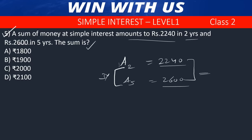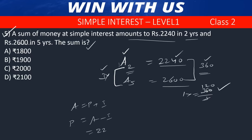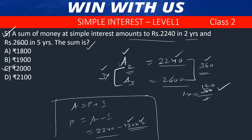Amount for 2 years equals principal plus interest. Interest for 2 years = 120 × 2 = 240. So principal = 2,240 minus 240 = 2,000. The answer is 2,000.